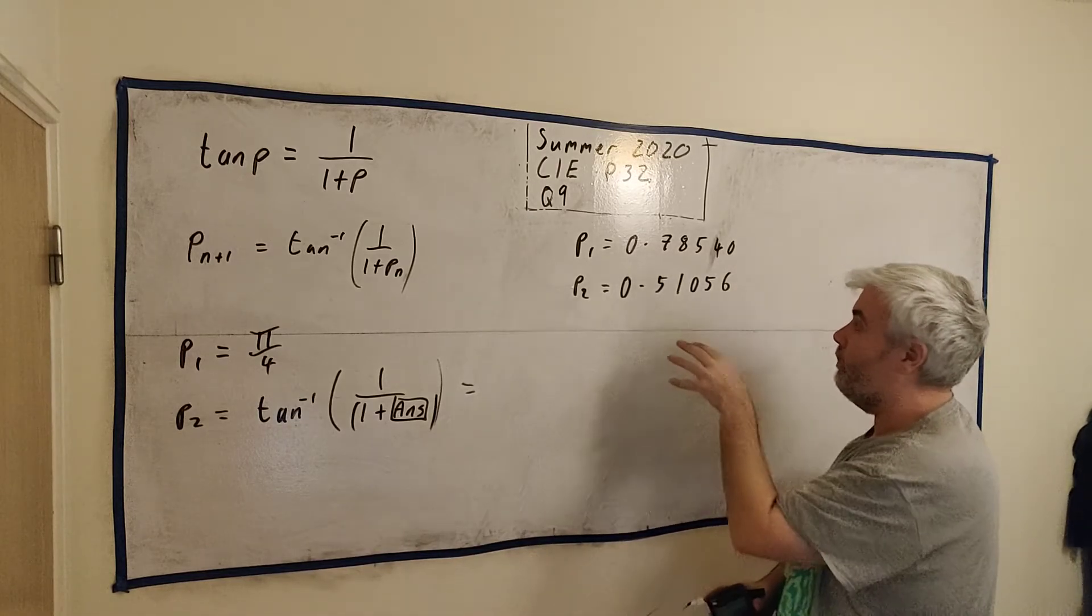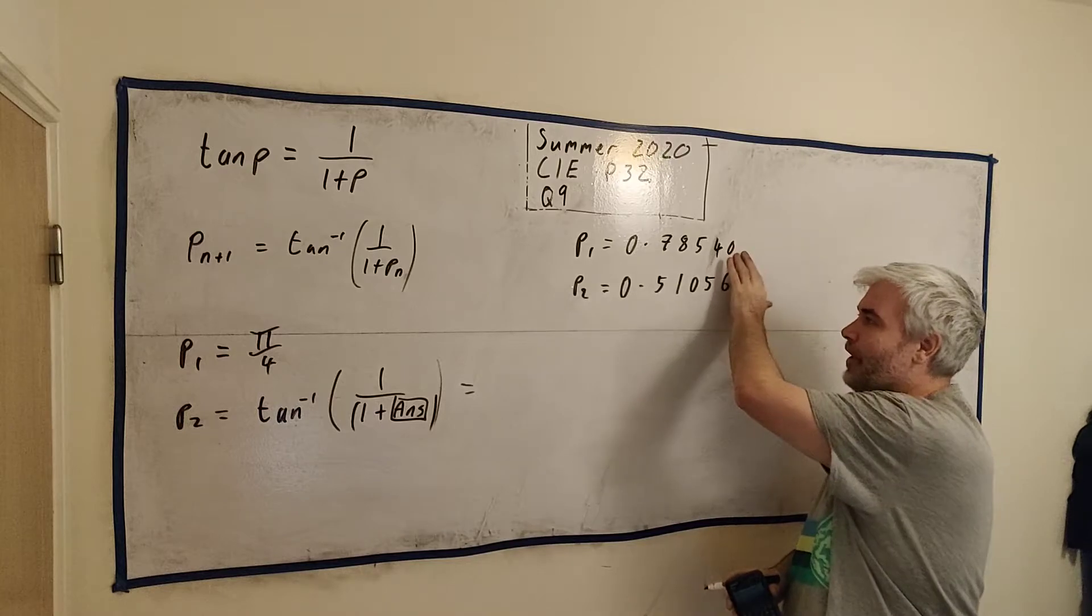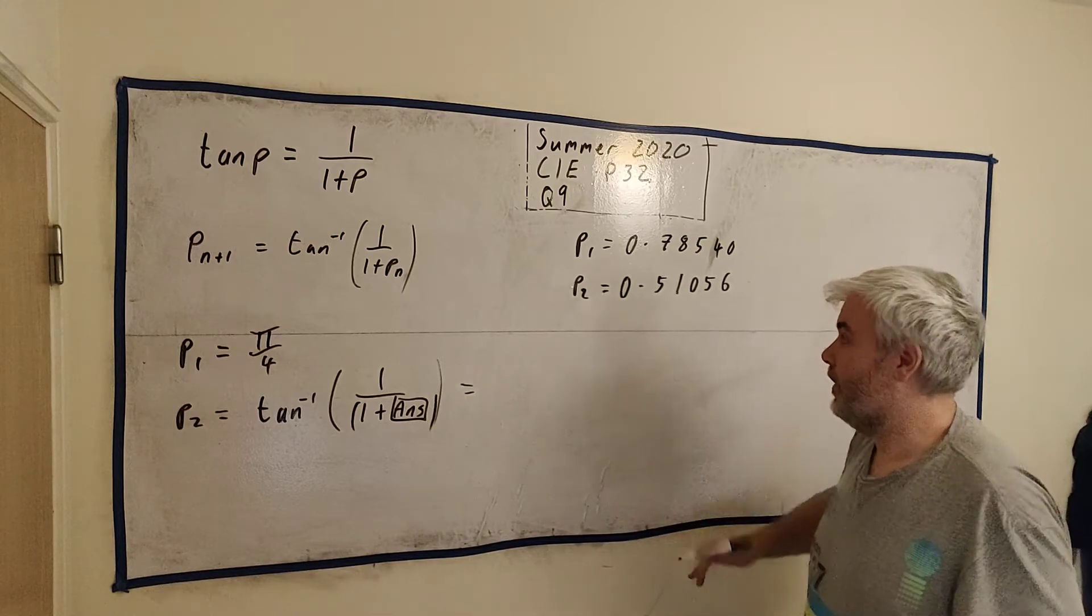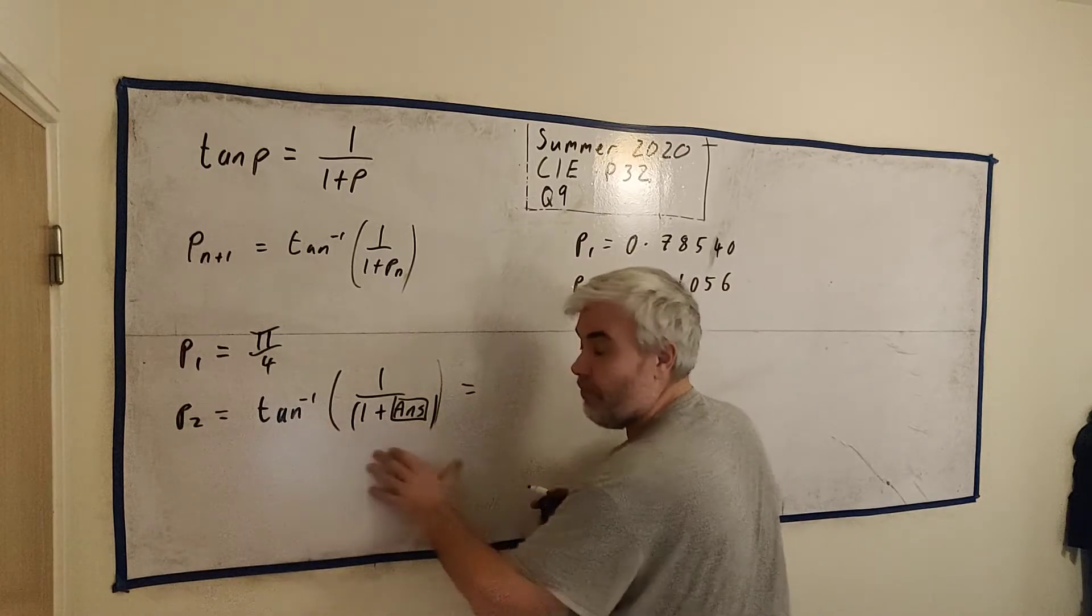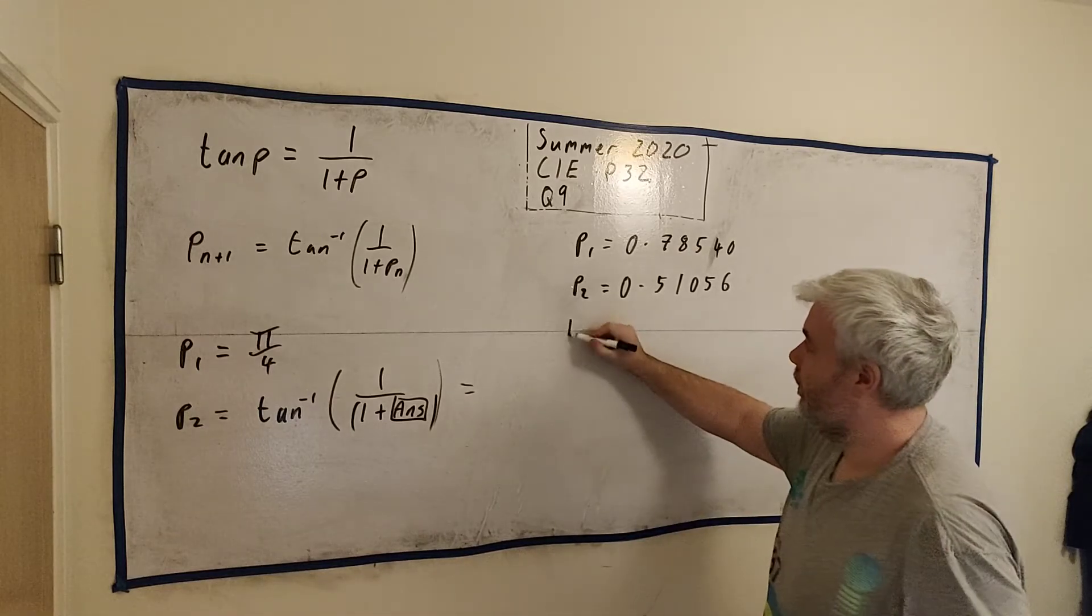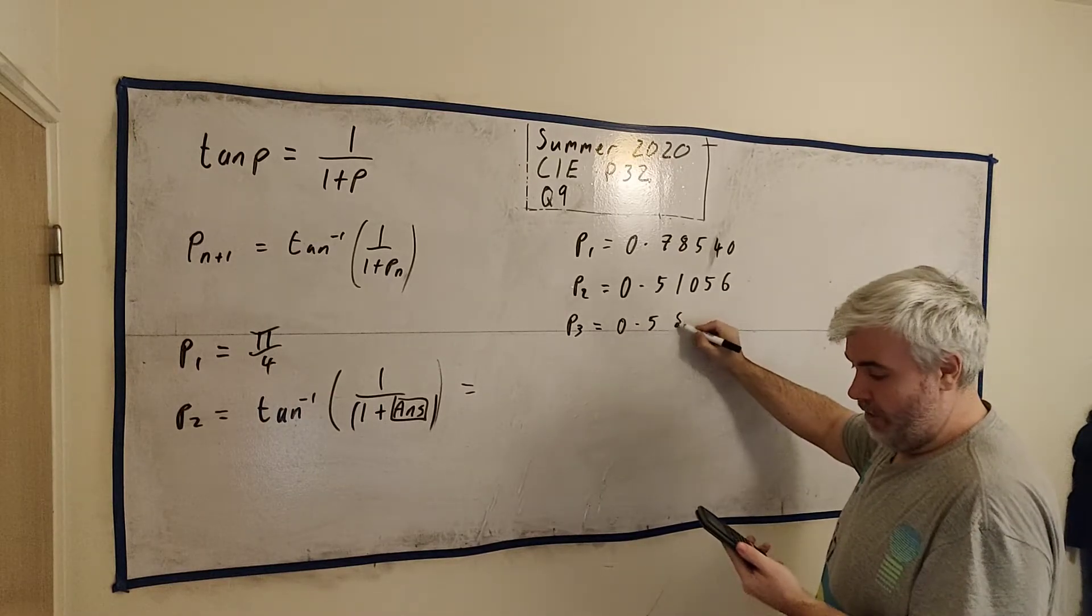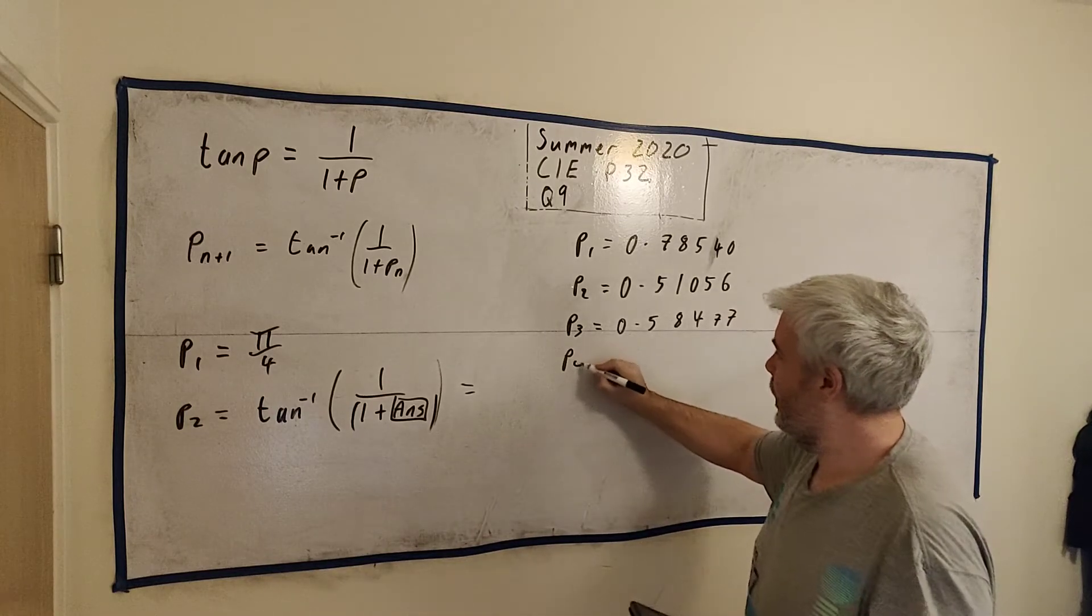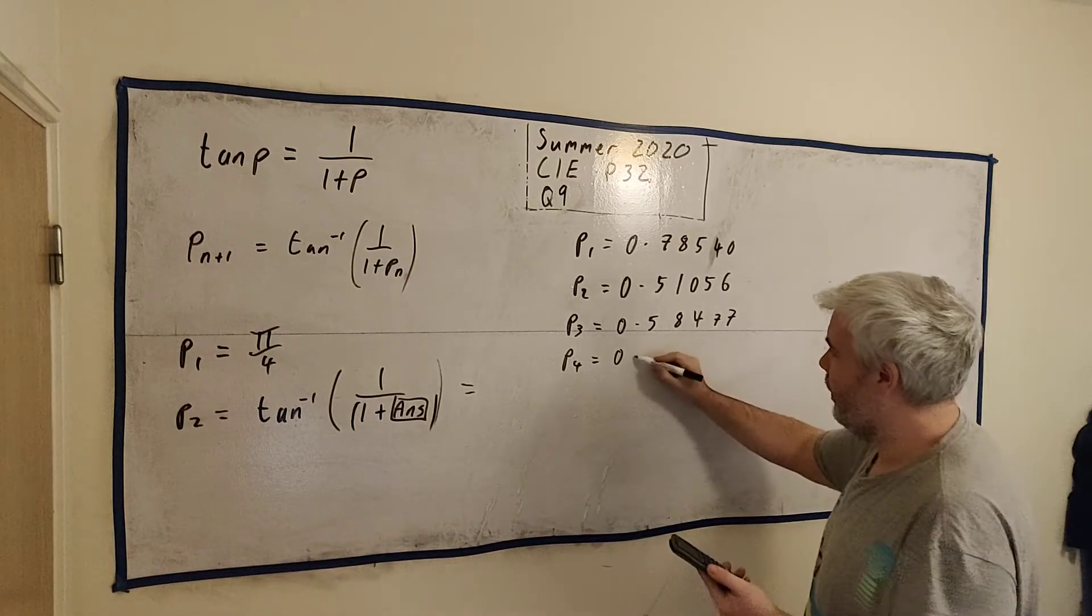So P2. If we put this into a calculator, the inverse tangent of 1 divided by, I'll put an extra bracket in here on my calculator. I'm always careful with my calculator. And we close the brackets. Press equals. And it will tell me the answer is 0.51056. Now what's happened here is we made this guess. The second guess, which is better, was this. This formula here said, it's not quite right. Here's my next guess.